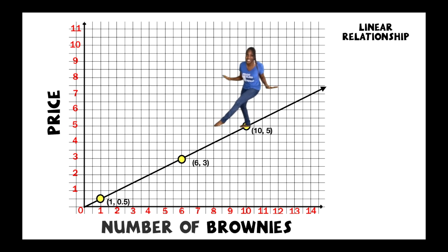If there is a linear relationship, that means there must be a pattern — a pattern of values that I can follow to look at this relationship. Going from each dot along the line, I go up one and over to the right two, up one and over to the right two. If I follow this pattern, I will hit every point on this line. This pattern is the slope of this line — it's the rise over the run — and in our case, the rise over the run is one over two. Every linear relationship has a slope like this.